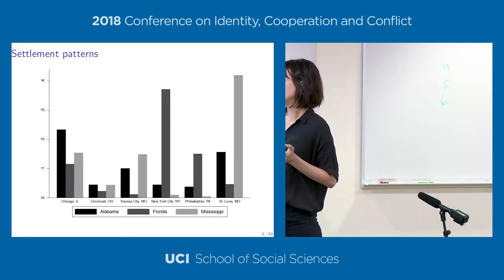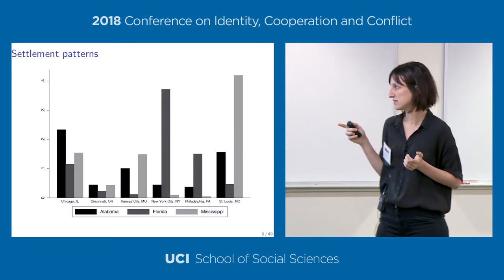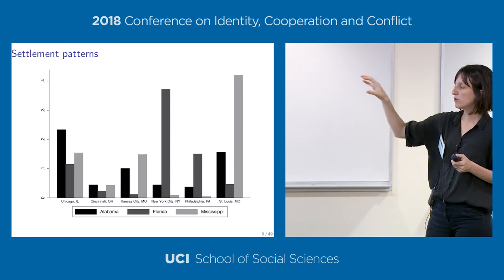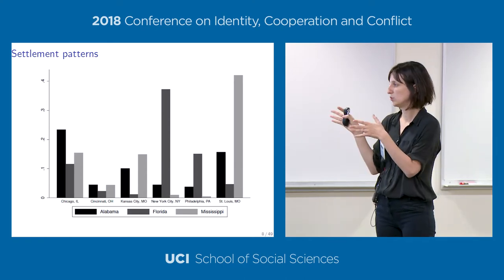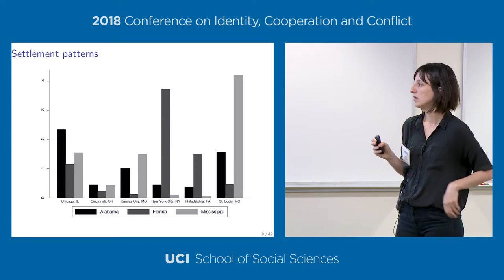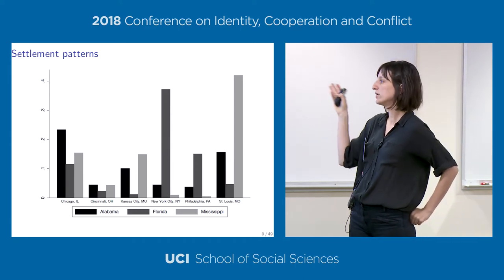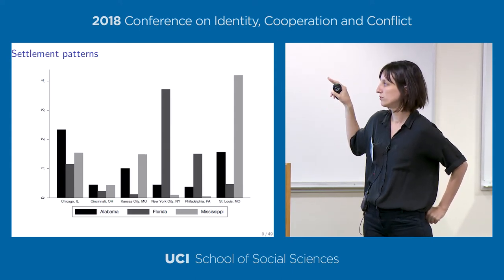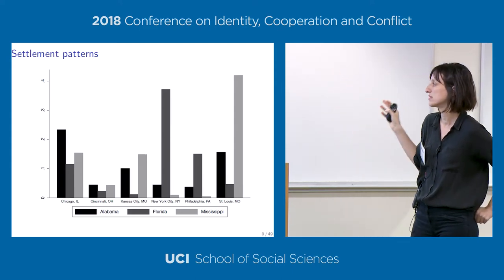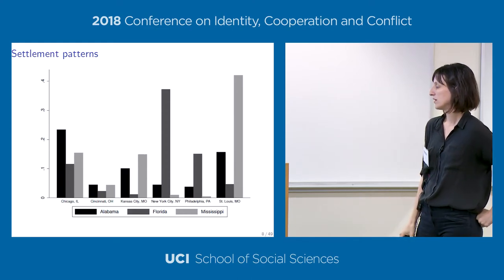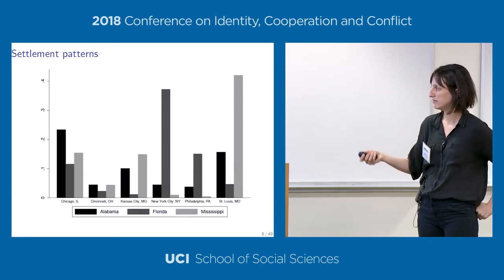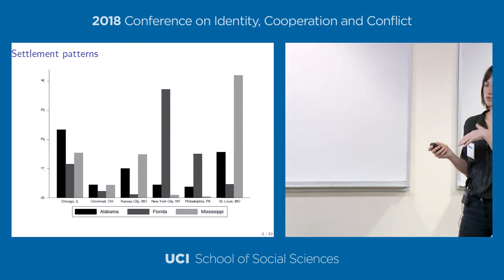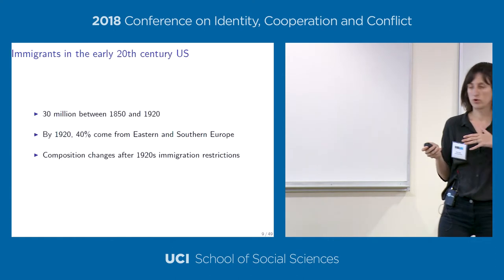A graph shows the share of blacks born in Alabama, Florida, and Mississippi who move out of the South, by northern metropolitan statistical area where they settle. For example, 40% of African Americans born in Florida who leave the South move to New York City, and over 40% of those born in Mississippi move to St. Louis, Missouri. This pattern is what we use later in our empirics.